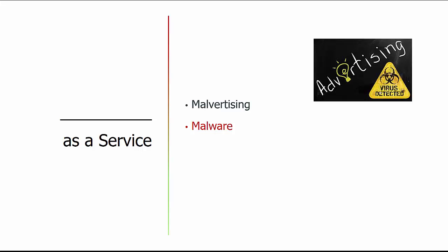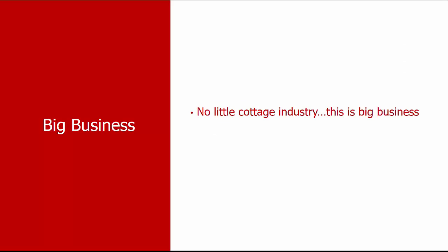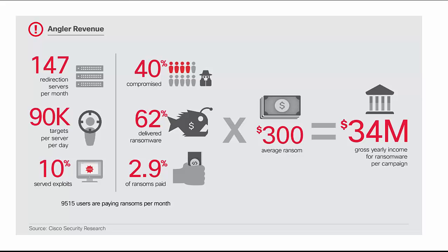You can also have malware as a service. This is a big business — this is not script kiddie stuff, and it has big numbers behind it. Out of 147 redirection servers running per month, Angler was targeting 90,000 people per day. If only 10% were served exploits, and of those exploits served, not even 3% were paying an average ransom of about $300, that still equates to about $34 million on the conservative side — roughly $3 million a month. There's a lot of money to be made in exploit kits.